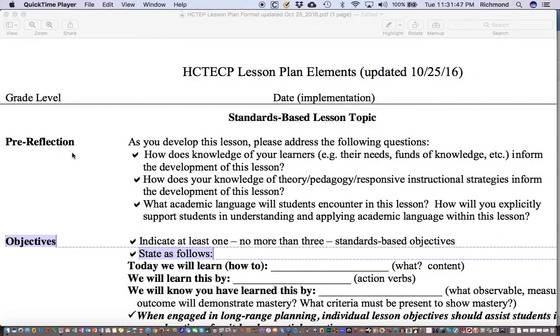This pre-reflection area is where you would identify the kinds of things that you would need to think about before teaching this specific lesson. There are three questions that you are told to address in this area: How does knowledge of your learners, for example their needs, funds of knowledge, inform the development of the lesson? How does your knowledge of theory, pedagogy, and responsive instructional strategies inform the development of this lesson? And what academic language will students encounter in this lesson? How will you explicitly support students in understanding and applying academic language within this lesson?